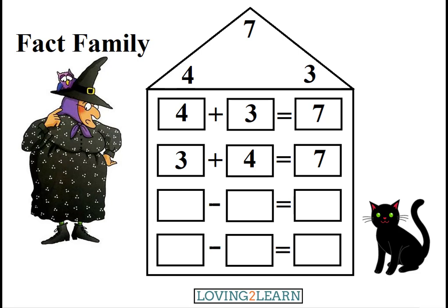This time, Midnight says, let's start with the 7. So we have 7 minus 3 equals what? That's right, 4. We can count down from 7 and take away 3: 7, 6, 5, 4. Or we just know that 7 minus 3 equals 4.